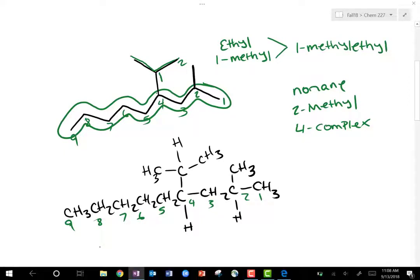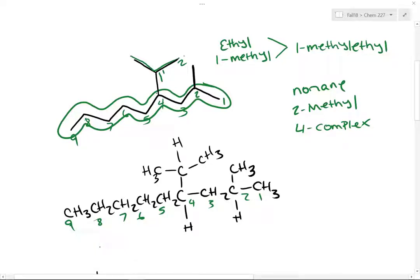Two carbons — that's the longest chain of the substituent. And then on the substituent there is a methyl substituent at carbon 1. You could call that carbon 1-prime and 2-prime if you want, but remember to include the name without the primes. So this would be 1-methylethyl.